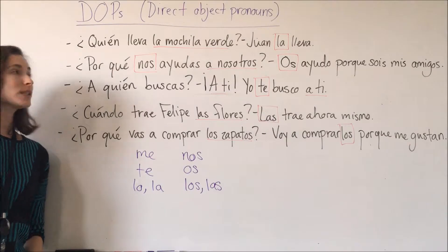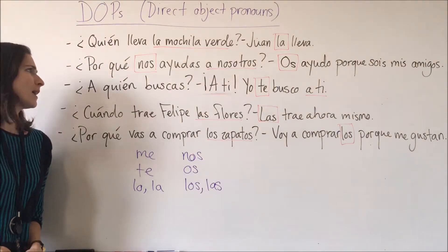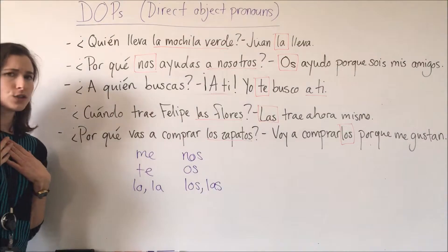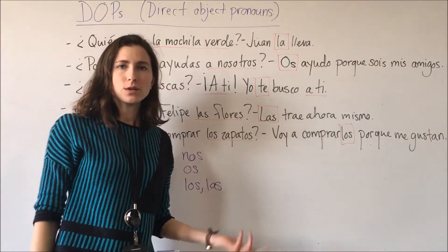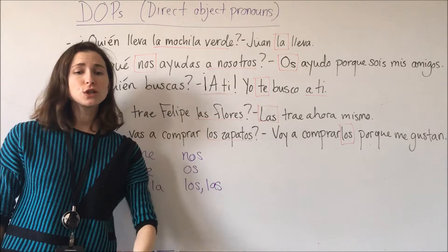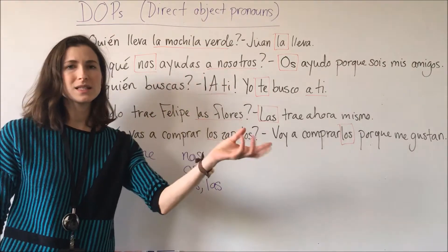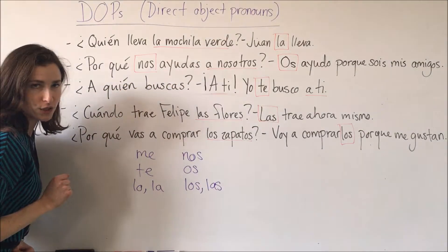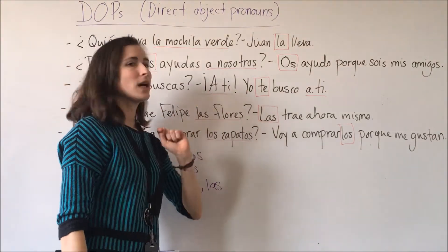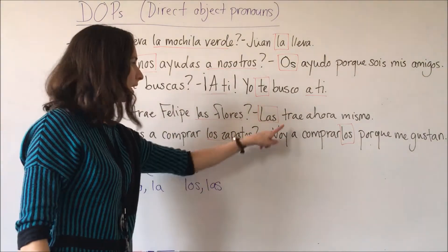Here we have several more examples of sentences using direct objects and direct object pronouns. ¿Quién lleva la mochila verde? La lleva — la replaces la mochila verde. ¿Por qué nos ayudas a nosotros? Os ayudo porque sois mis amigos. Nos refers to a nosotros, and we have os for a vosotros in the answer. ¿A quién buscas? A ti. Yo te busco a ti — te refers to a ti, you. ¿Cuándo trae Felipe las flores? Las trae ahora mismo — las refers to las flores.